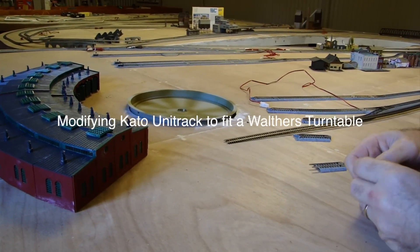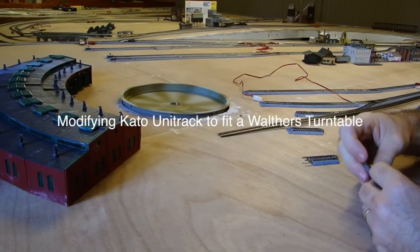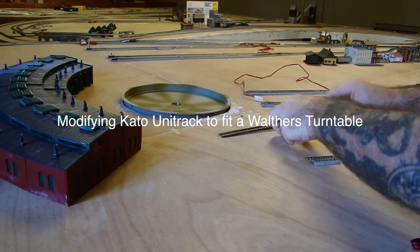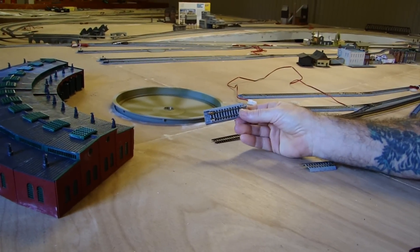I'm just going to show you a quick way to use Kato Unitrack to connect up to your turntable. Traditionally what you've used is this piece of track here from Kato. This is a snap track converter.